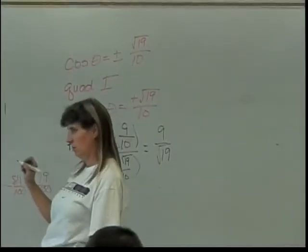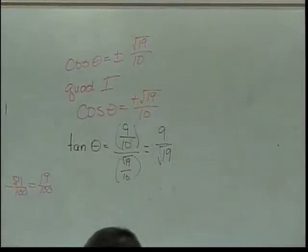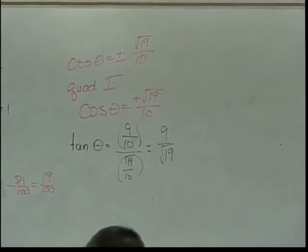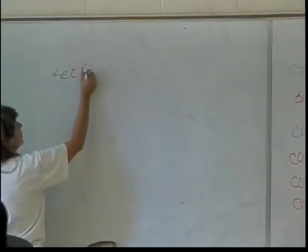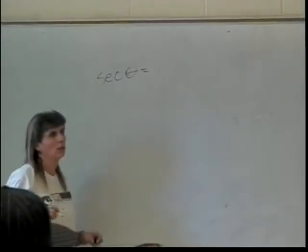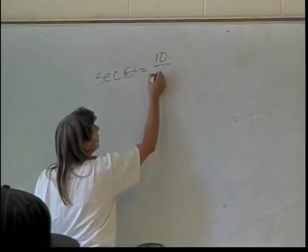What was the next one? Secant was the next one. What's the secant of theta? 10 over root 19. It's 10 over root 19 because I take my cosine and I flip it over.